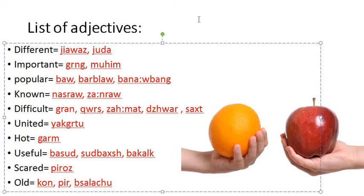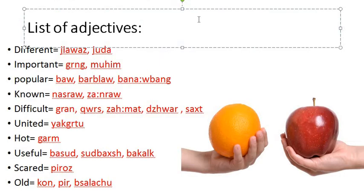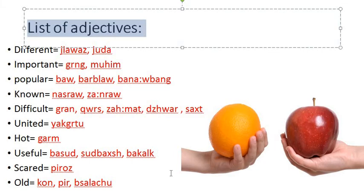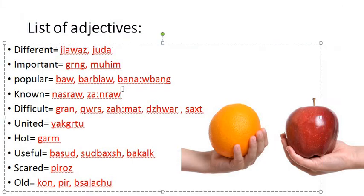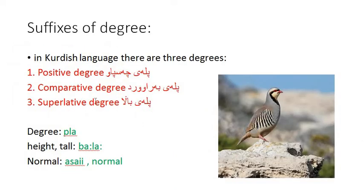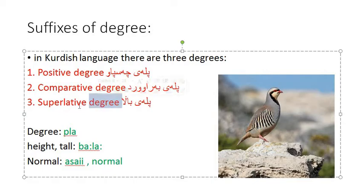The grammatical lesson will be finished here. If you only want to know about comparison and superlative, you don't need to go on to the adjectives list. But the adjectives list is really good for practicing comparative and superlative as well.